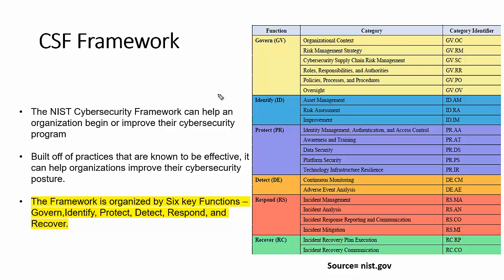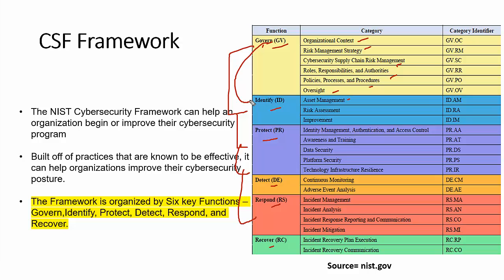When we talk about the NIST Cybersecurity Framework, it has six core functions: Govern, Identify, Protect, Detect, Respond, and Recover. Govern is a holistic view encompassing the overall framework. Under Govern, we start with organizational context, then risk management strategy, supply chain roles and responsibilities, policies, procedures, and oversight. In CSF 1.1, Govern was part of Identify, but now it has been made a separate function.